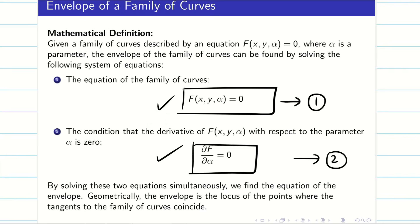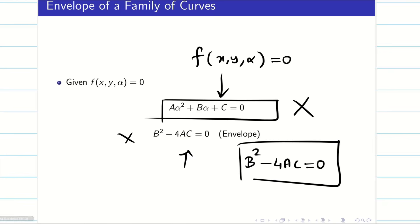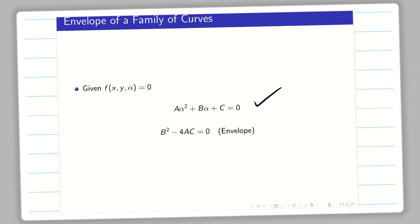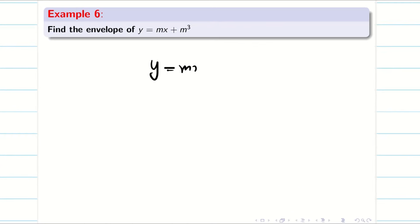In the first part of the video we saw problems purely on quadratic. Now we are going to see some problems which cannot be expressed as quadratic, and how to solve them. Given y = mx + m³, let us take this as equation one. It is very obvious it is not quadratic because the highest power is three — this is a cubic equation in terms of the parameter m.